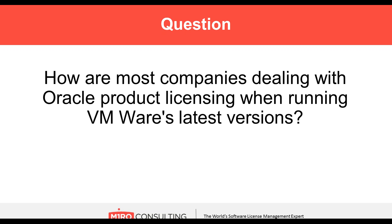How are most companies dealing with Oracle product licensing when running VMware's latest versions? There's still a lot of confusion out there with VMware, mainly because as Oracle does with most of their policies, when they come out with a change they don't announce it to everybody — they rarely announce it to anyone. No one actually knows a change occurred. They typically don't make a policy change that affects the document, and a lot of their policies aren't even documented. VMware is an example of that. There is no Oracle document that is a specific policy document — the only documents Oracle provides reflect that Oracle does not recognize any features within VMware to be able to segment processing power for licensing purposes.